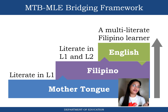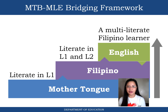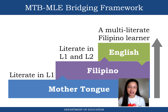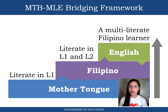The bridging framework for mother tongue works as follows: the child is first literate in the mother tongue at level one, then Filipino is introduced at levels one and two, and by Grade 3 the child becomes a multi-literate Filipino learner also proficient in English. From Kinder 1 to Grade 3, the child must be acquainted with the mother tongue.